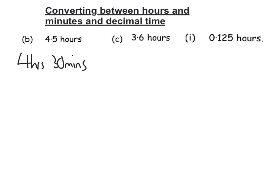The second one is 3.6 hours. So first I've got to change that 0.6 into the number of minutes, and how I do that is I multiply by 60. So 0.6 times 60 is 36. So that 0.6 is 36 minutes. So I've got 3 hours, as it says 3.6, and 36 minutes.